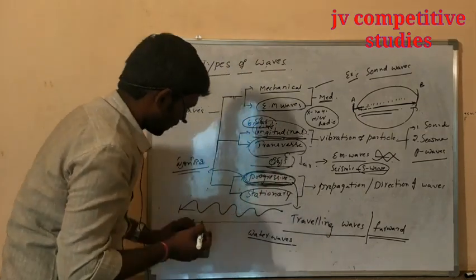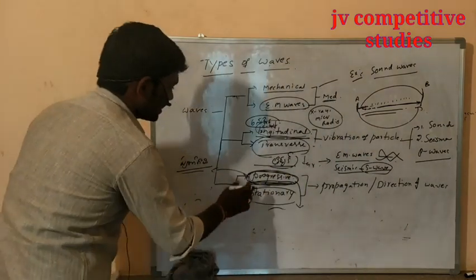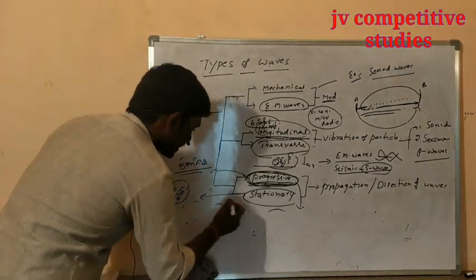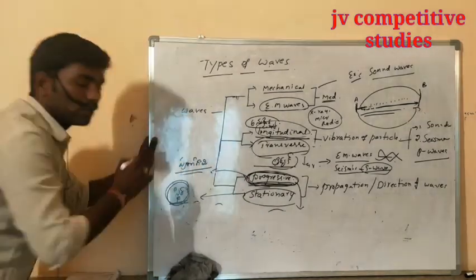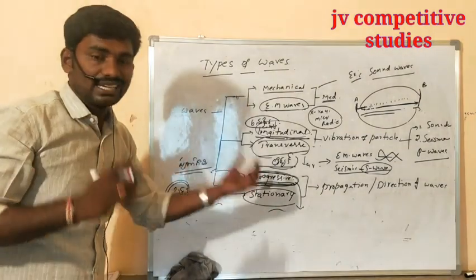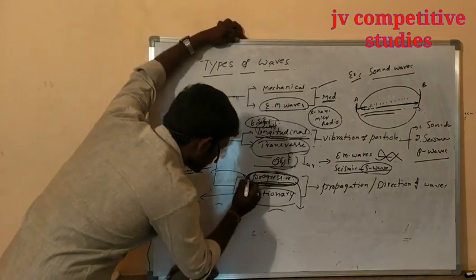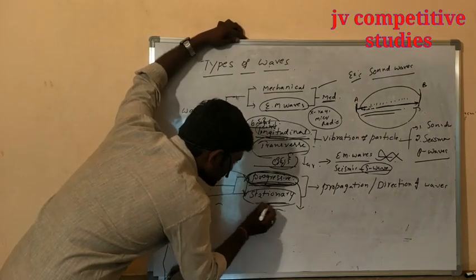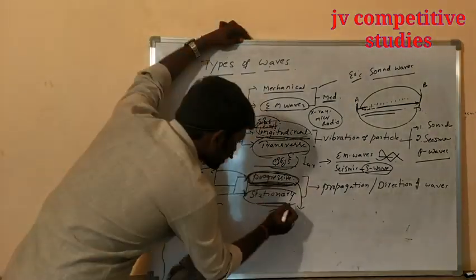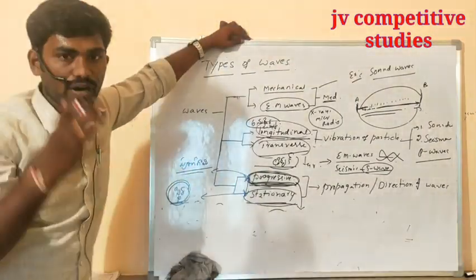Next, stationary waves. The name itself tells — stationary. The difference between progressive and stationary waves: in case of progressive waves, the energy transfers continuously. But in case of stationary waves, the energy does not transfer from one point to another point.